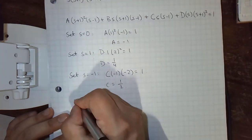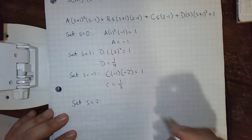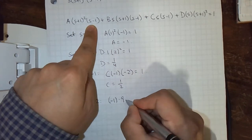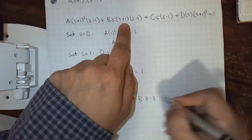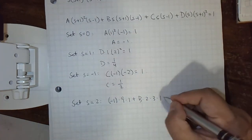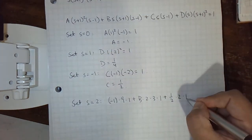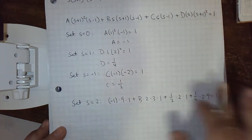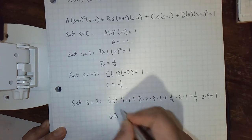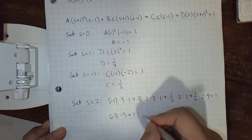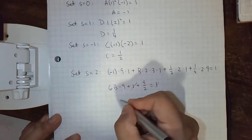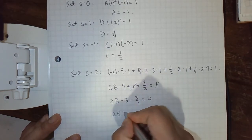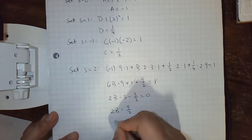The B term disappears for all root substitutions, so we need a different value. We'll pick s equals 2. Nothing disappears, but we have values for A, C, and D. Plugging in: minus 1 times 3 squared times 1 plus B times 2 times 3 times 1 plus 1/2 times 2 times 1 plus 1/4 times 2 times 9 equals 1. This gives 6b minus 9 plus 1 plus 9/2 equals 1. Dividing through by 3 and simplifying: 2b equals 9/2, so b equals 9/4.